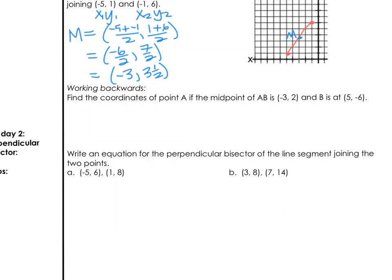However, like distance formula, we can work backwards. It says find the coordinates of point A if the midpoint is (-3, 2), and B is at (5, -6). So if our midpoint is here, then B is the only value we can identify. Let's call that x1, y1. And if the midpoint formula is the sum of the x's divided by 2 and the sum of the y's divided by 2, we'll have (x1 plus x2) over 2, (y1 plus y2) over 2.